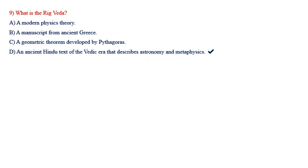What is the Rig Veda? Options: a modern physics theory; a manuscript from ancient Greece; a geometric theorem developed by Pythagoras; or Option D — an ancient Hindu text of the Vedic era that describes astronomy and metaphysics. The answer is Option D.